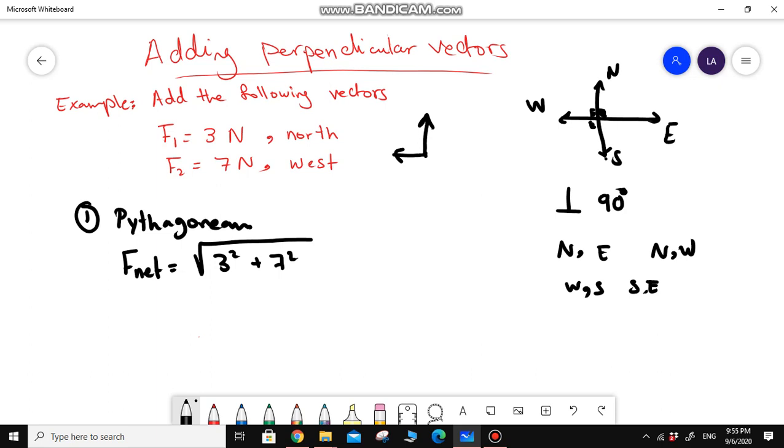Try to find the answer. Here, you will get 7.62 newton. This is the magnitude of the resultant vector. But all the time, to describe the vector completely, we need to mention the angle.